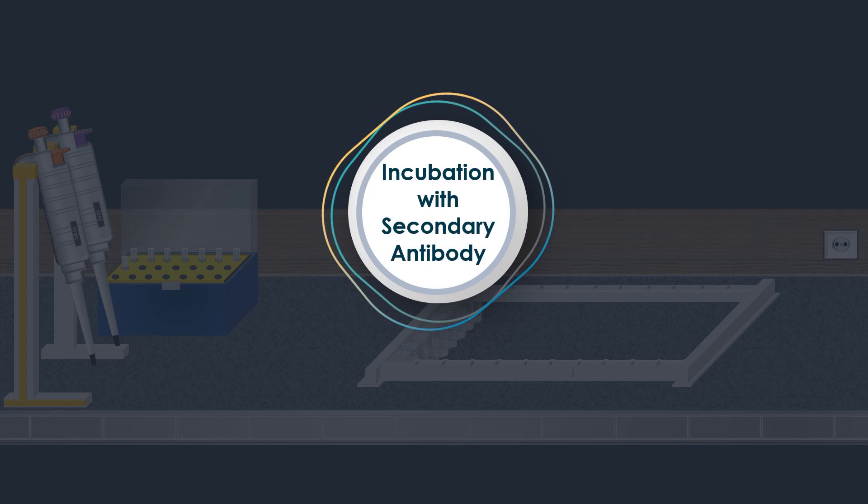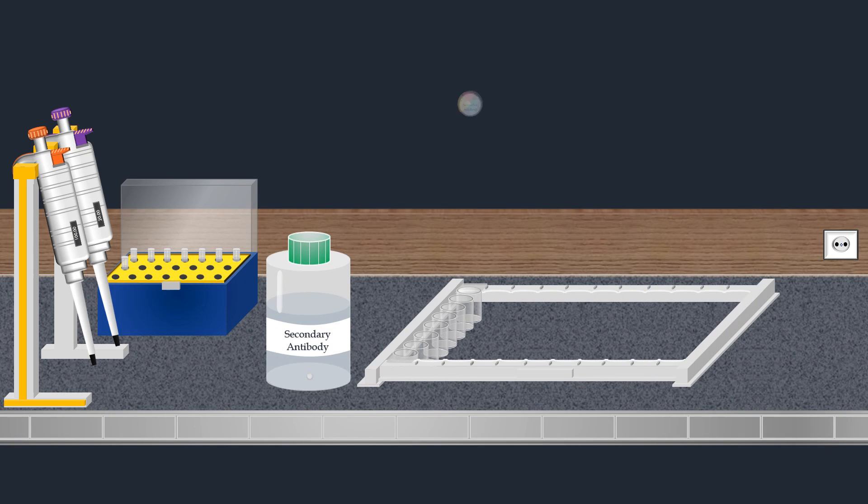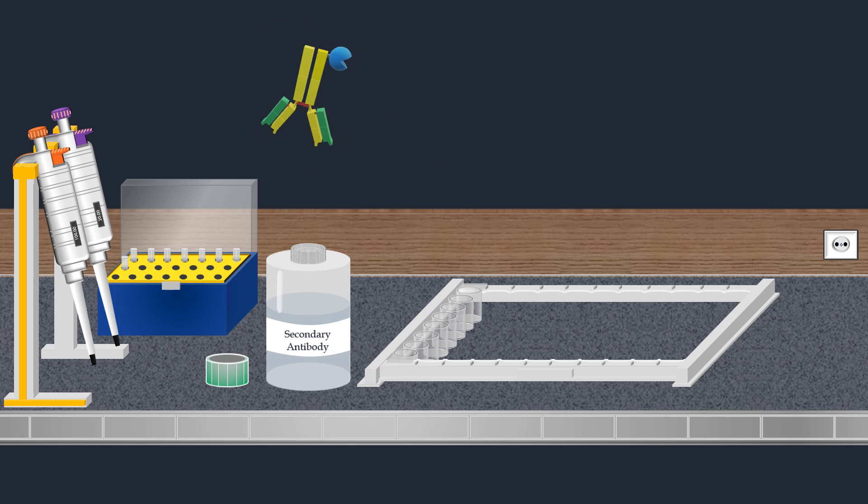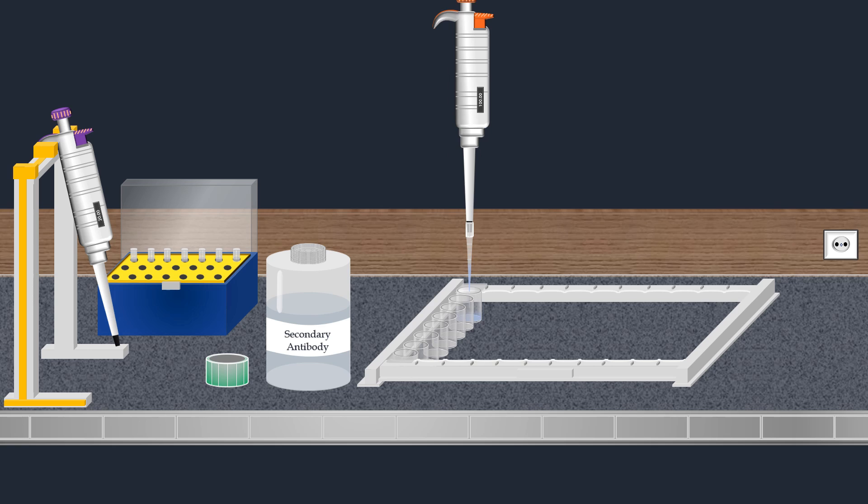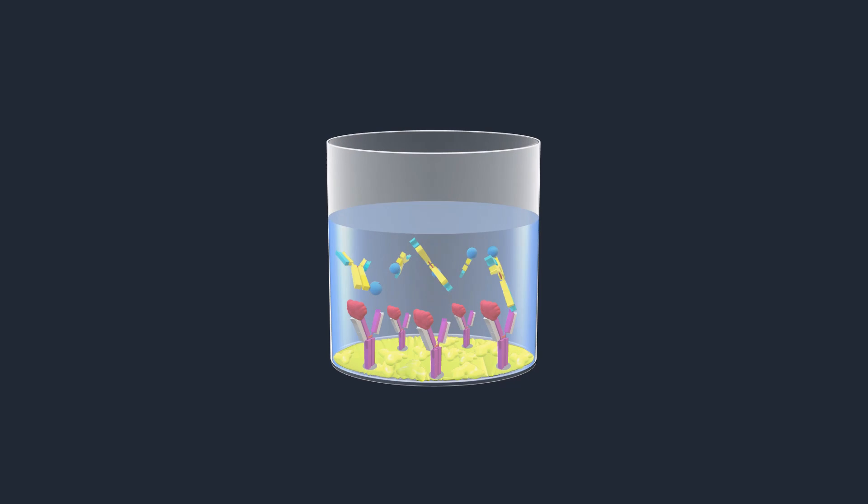The next step involves incubation with a secondary antibody, which is a conjugated antibody designed to enable the detection and quantification of targeted TSH. The secondary antibody solution is added to each well, and then the well strip is covered and incubated. The secondary antibody is specifically designed to bind to the targeted thyroid-stimulating hormone present in the wells.